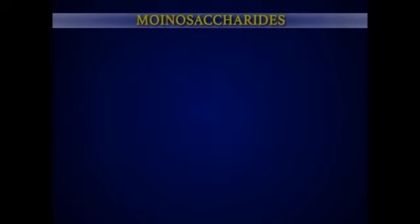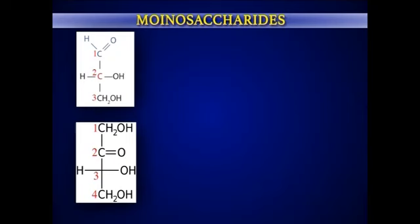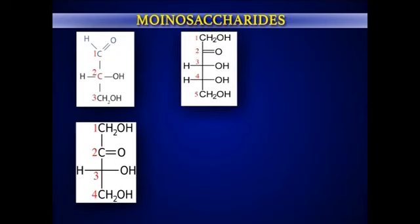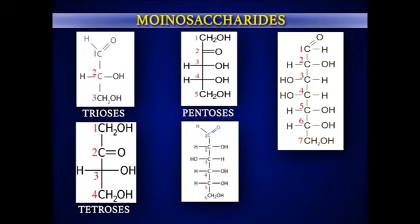Monosaccharides with three, four, five, six, and seven carbon atoms in their backbones are called trioses, tetroses, pentoses, hexoses, and heptoses respectively.